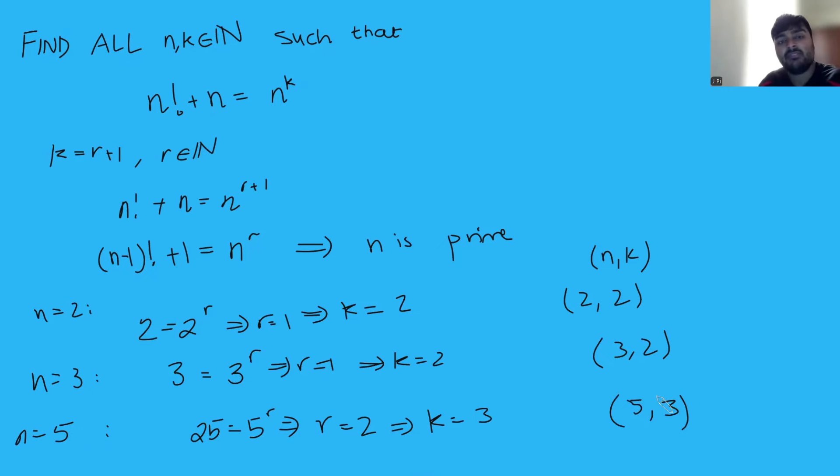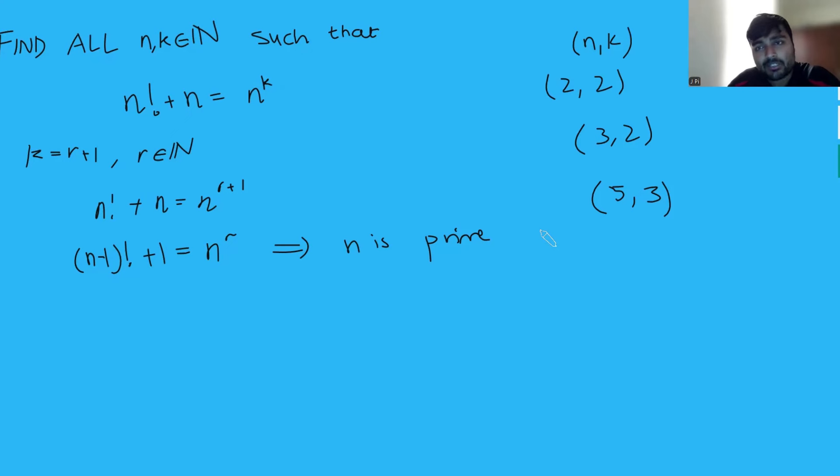You could test the next prime, 7. You could then test 11. But then the numbers get quite big, especially with the factorials, and I'm not very confident with my powers of 13, for example. So we're going to stop there. But now we're going to investigate maybe slightly more analytically what happens with larger values of n. So I'm just going to put a box around these solutions we have up here.